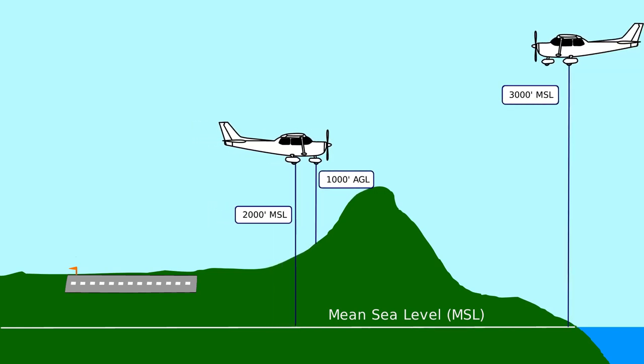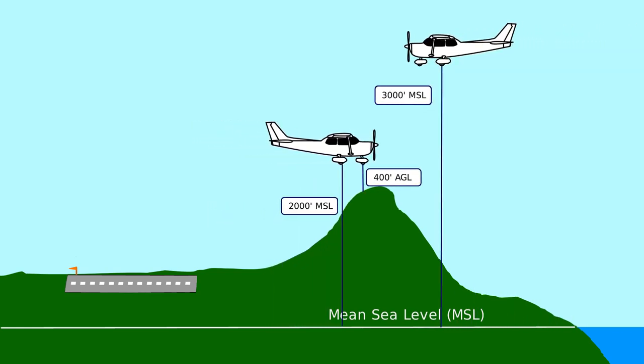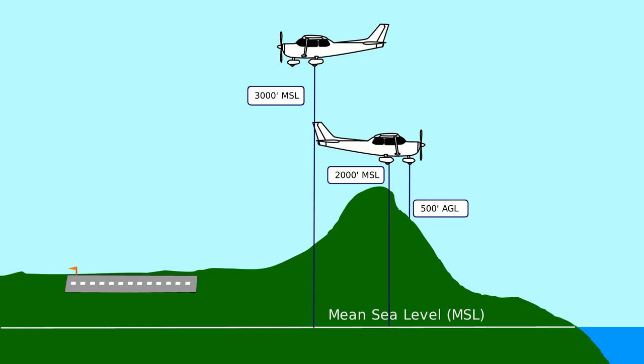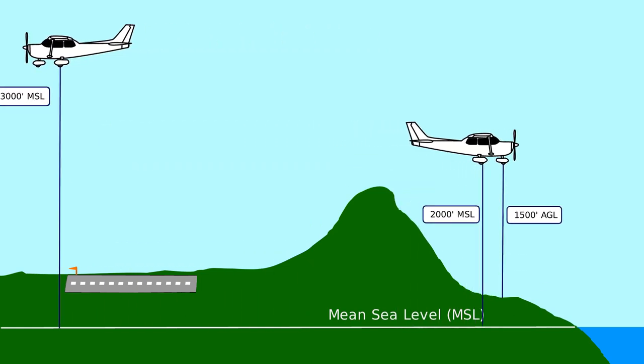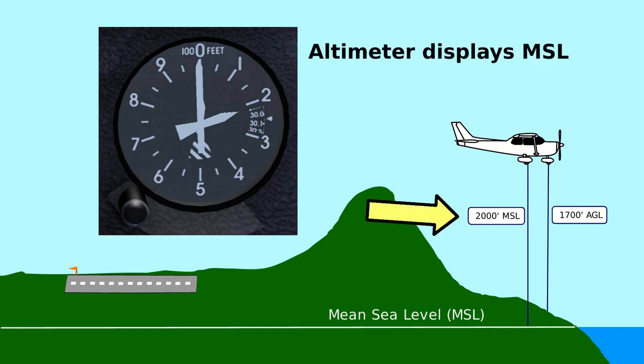Since aircraft need to know where each other are in order to participate in the National Airspace System, we need everyone to be measuring their altitude with respect to the same reference point. So the altitude that's displayed on an aircraft's altimeter is with respect to sea level, or MSL.